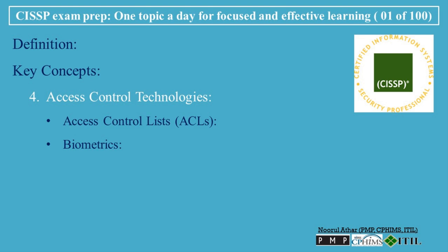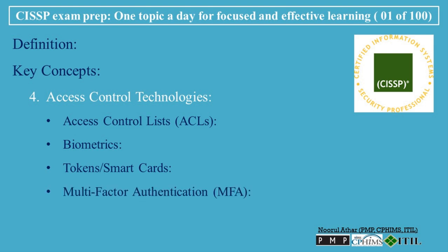5. Biometrics: using physical characteristics like fingerprints, retina scans, or facial recognition to verify identities. 6. Token/Smart Cards: hardware devices or software applications that generate unique codes for authentication. Multi-Factor Authentication (MFA) is a security process that requires users to provide two or more verification factors to gain access — for example, something you know (a password) and something you have (a token).